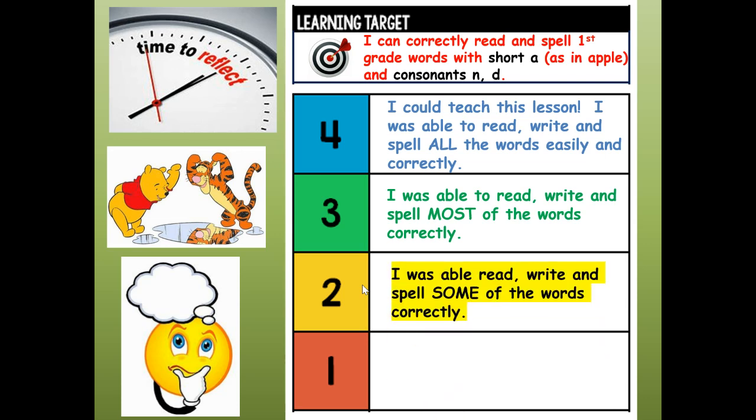Or would you give yourself a two? I was able to read, write, and spell some of the words correctly. Or one. I was not able to read, write, and spell any of the words correctly. If you need to, go back and re-watch this video to make sure all your words are spelled correctly. But my challenge to you now is to rainbow write each of the words, one through twelve, three times each with your favorite colors or with your pencil. And thank you for doing this spelling lesson with me. If you want more practice, look for my next spelling video for the same lesson for numbers 13 through 24. And thank you again and have a great day.